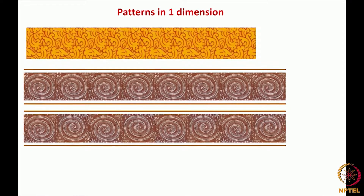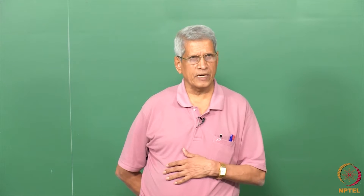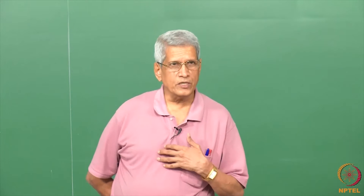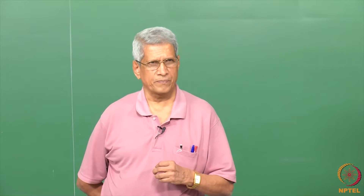Let us look at some patterns in one dimension and two dimensions to understand this. Though we want to construct crystals in three dimensions, it is better to start from lower dimensions because some crystals have one-dimensional periodicity. If you look at surfaces of a material, a surface is a two-dimensional crystal, while a bulk crystal is a three-dimensional crystal. So it is important to know what types of periodicity exist in all dimensions.